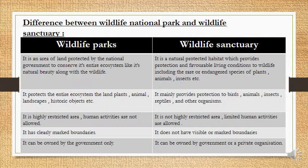Wildlife Parks protect the entire ecosystem — land, plants, animals, landscapes, historic objects, etc. Wildlife Sanctuaries mainly provide protection to birds, animals, insects, reptiles, and other organisms. Wildlife Parks are highly restricted areas where human activities are not allowed, whereas Wildlife Sanctuaries are not highly restricted and human activities are allowed within them. Wildlife Parks have clearly marked boundaries, while Wildlife Sanctuaries do not have visible or marked boundaries. Wildlife Parks can be owned by the government only, whereas Wildlife Sanctuaries can be owned by the government or a private organization.